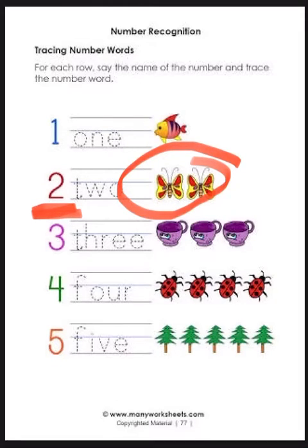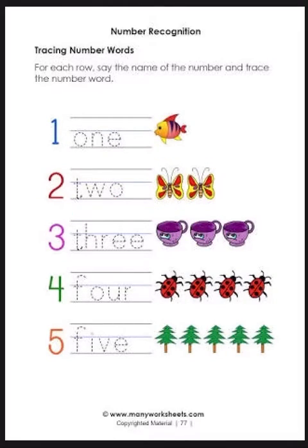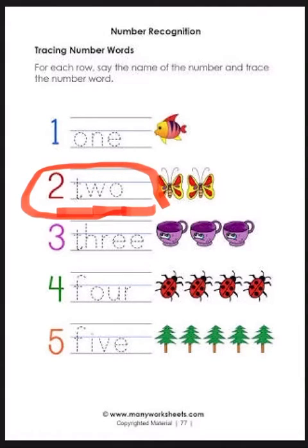We write two like this. Say the spelling of two: T-W-O, two. T-W-O, two.